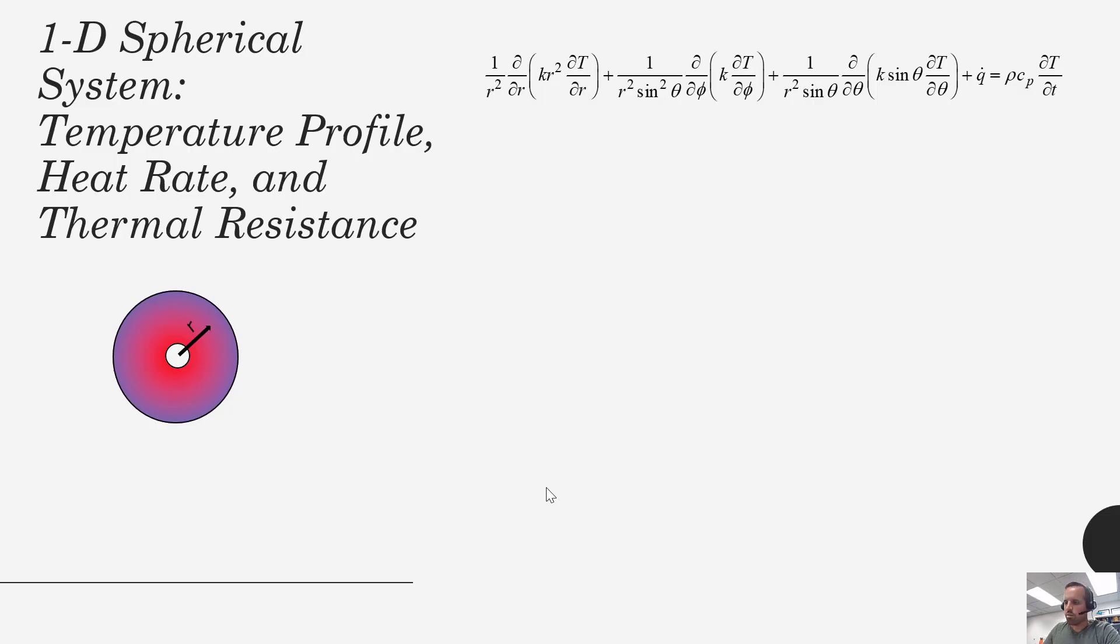In the previous lectures we've done this for a plane wall and for a cylindrical wall. Now we're going to do this for a spherical wall. A spherical wall just means you have a hollowed out sphere, and then you'd have heat conduction going all the way through this spherical wall or spherical shell to the outside, and you may have convection happening on the outside as well as on the inside.